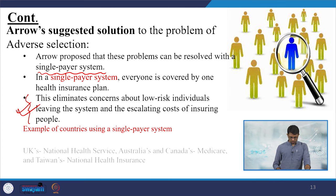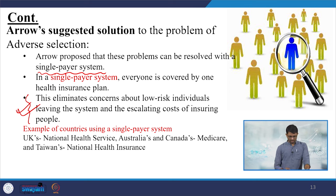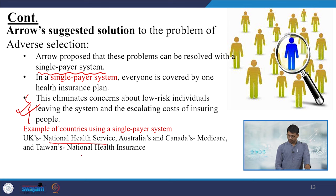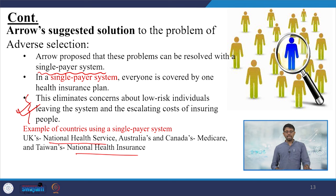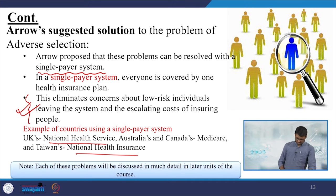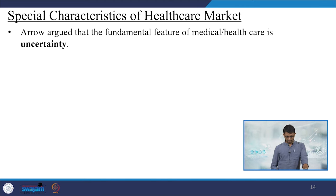Examples of single-payer solution-based models include the UK's National Health Service, Australia and Canada's Medicare, and Taiwan's National Health Insurance. These are single-payer models that Arrow actually proposed long back. Each of these problems — information gap, moral hazard, and adverse selection — will be discussed in specific units as mentioned.